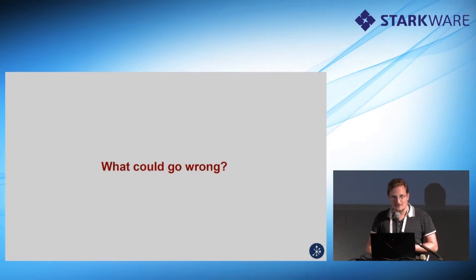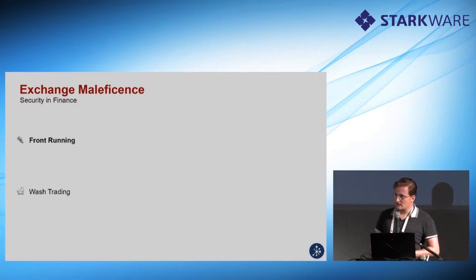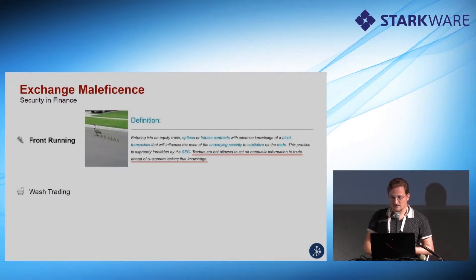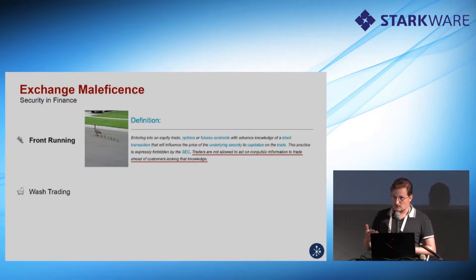So what could possibly go wrong? Martin already mentioned front running issues very well. There are actually many different things that can go wrong in exchanges. Within this talk we will focus on front running primarily — it's defined as when you enter into an equity trade, option, or futures contract with advanced knowledge of a block transaction, a large transaction, where you're aware your trade will influence the price of the underlying security and your only intention is to capitalize on that change. That's actually forbidden by the SEC, and traders are not allowed to act on non-public information in general.